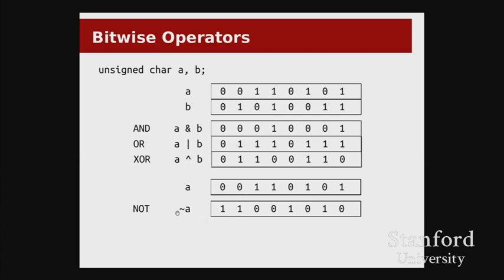The NOT operator uses tilde. This is different from exclamation point and different from negative. The tilde operator simply says: take every bit in a and flip it. If it was a zero, put a one; if it's a one, put a zero.